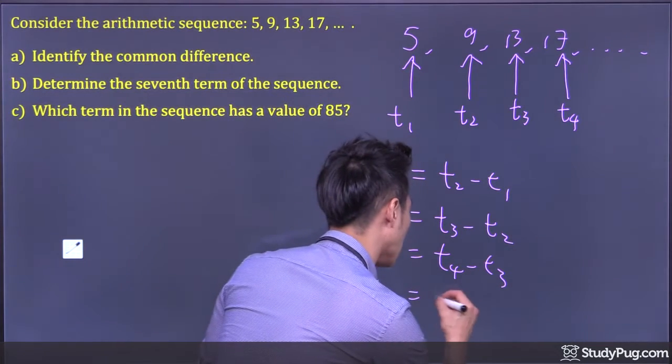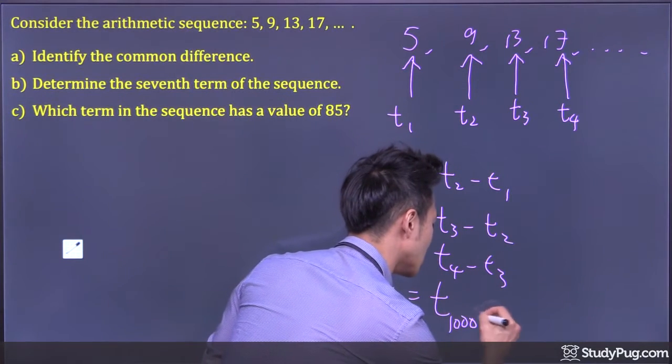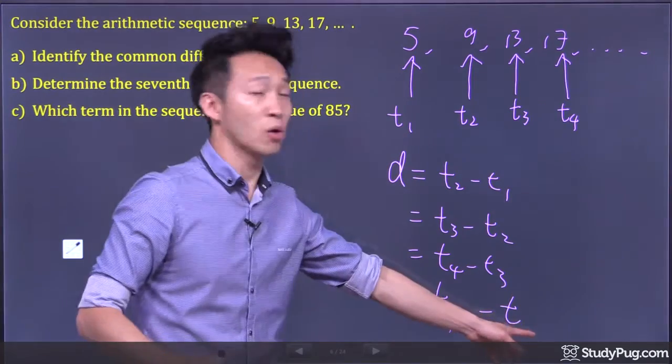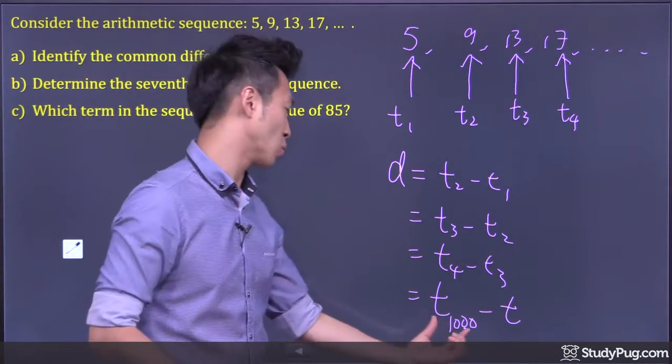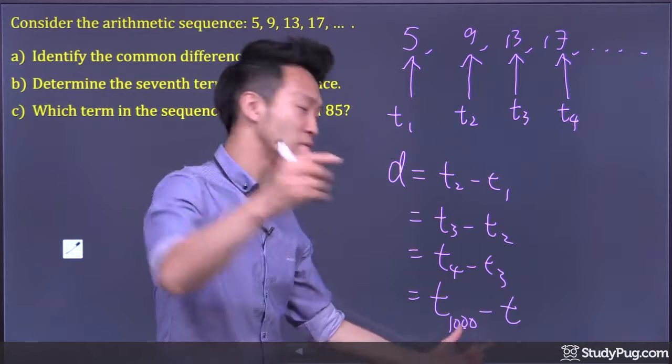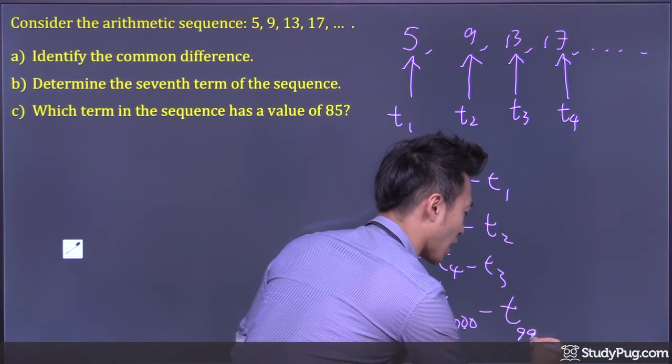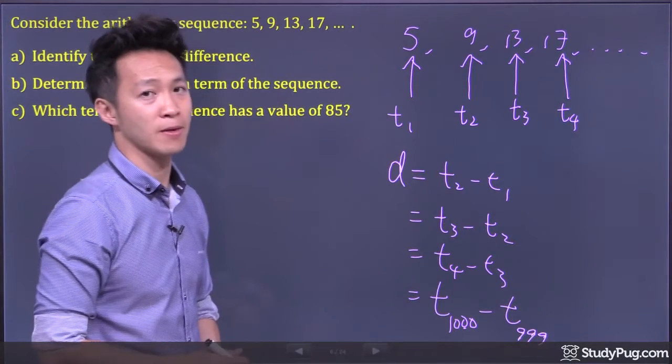Or we can even go term 1000 minus term—guys, which term is before term 1000? That would be 1000 subtract 1, we get term 999.